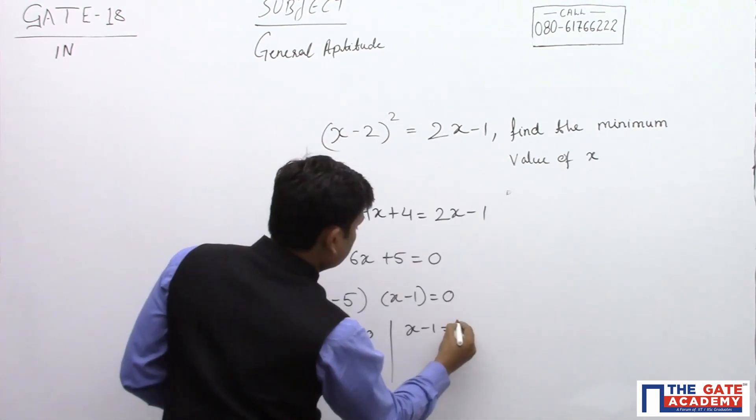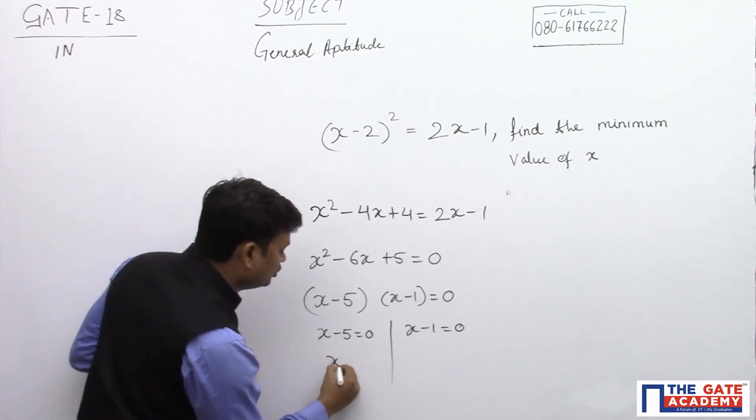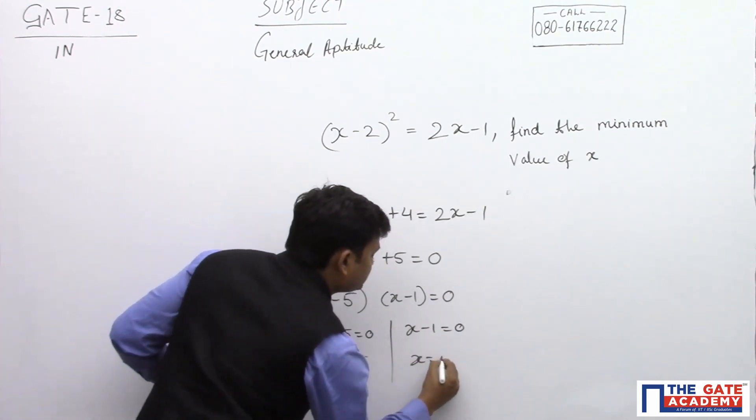So let's simplify the question. When you simplify the question what you will get is x value as 5 or x value as 1.